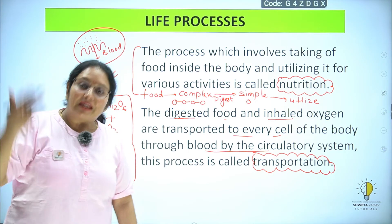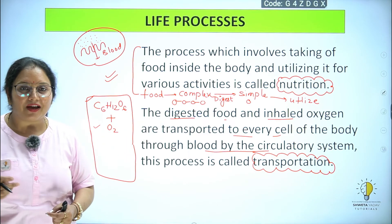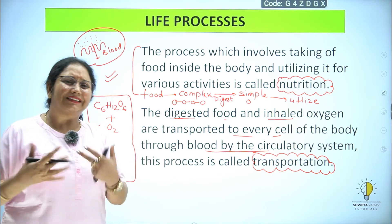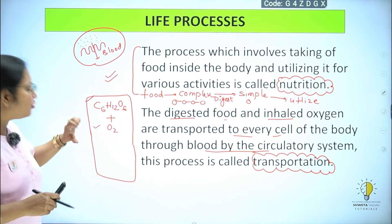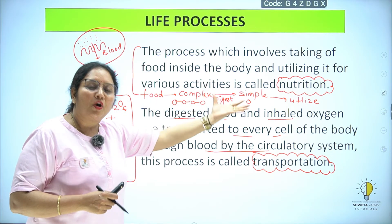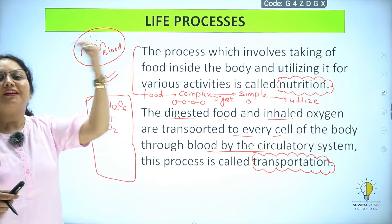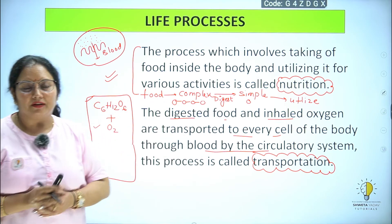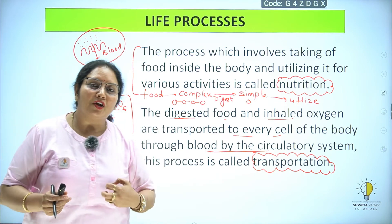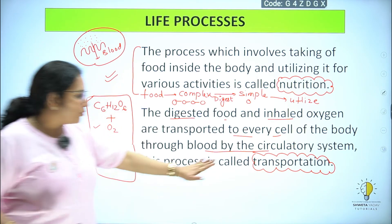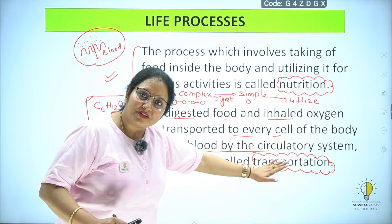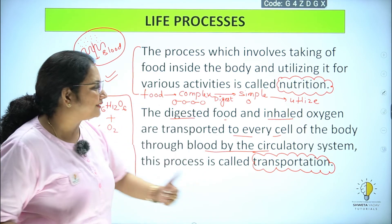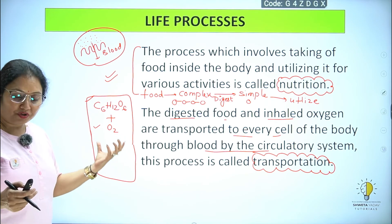Blood केवल food को ही circulate नहीं करता — वो hormones को भी करता है, ions को भी, gases को भी, waste को भी। Blood ने सब को body में घुमा दिया, हर cell को दे दिया। उसी के साथ साथ जब inhaled oxygen आया तो उसको भी सब cells को दे दिया — transportation ने अपना काम पूरा कर दिया। Circulatory system की मदद ली, heart ने blood pump किया, और पूरे organs में सभी tissues और cells को उनकी requirement के अनुसार nutrients मिल गए।